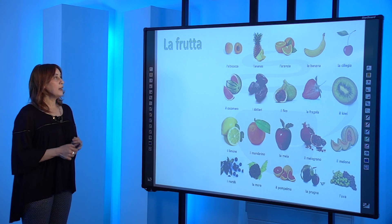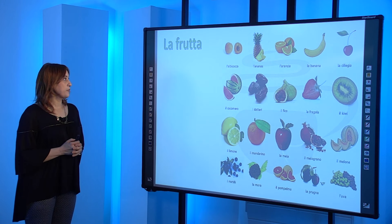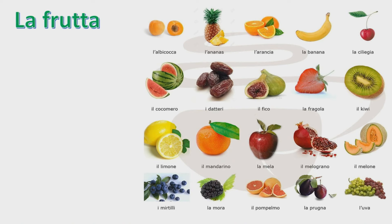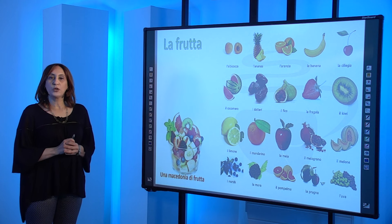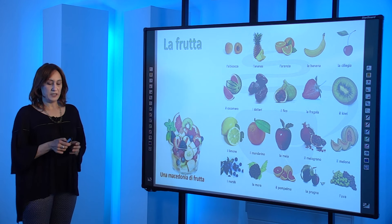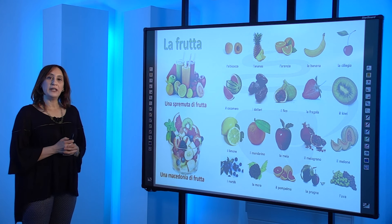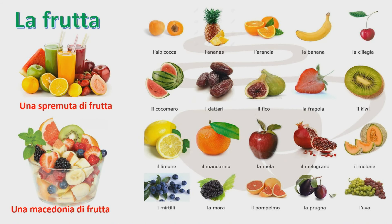Adesso vediamo la frutta. Eccovi alcuni esempi di frutta, come l'ananas, l'arancia, la banana. Cosa possiamo fare con la frutta? La possiamo mangiare cruda o fare una macedonia di frutta, come vedete sulla foto, con il kiwi, la fragola, la banana, la ciliegia, la mela, l'uva. Possiamo fare una macedonia di frutta da mangiare come dessert, o bere una spremuta di frutta, soprattutto la mattina a colazione.